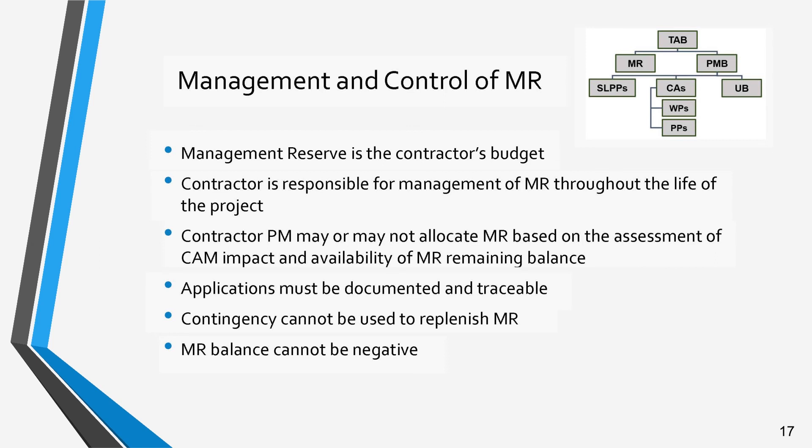It is important that MR be carefully controlled and monitored in formal records, such as the MR and CBB or PBB logs. These logs must be directly traceable to the IPMR with narrative explanations of MR use included in Format V. DOE contingency cannot be used to replenish MR. MR cannot be allocated beyond what exists — in other words, the balance cannot be negative.